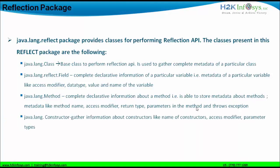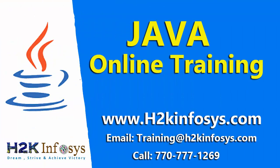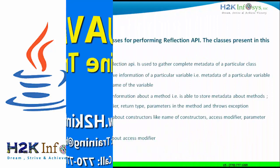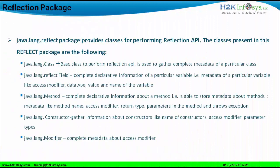There is another class called the 'Constructor' class, which gathers information about the constructors present in the class. The constructor information is in terms of metadata — the name of the constructor, the access modifier used with the constructor, and the parameter types present in the constructor. The next class in the reflection package is the 'Modifier' class, which gives complete metadata information about the access modifiers being used with different variables, methods, or constructors.